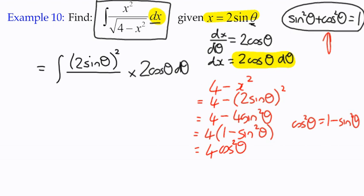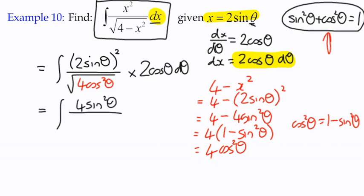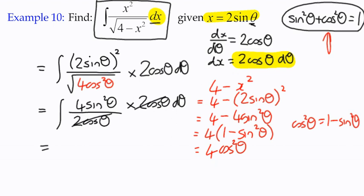We now substitute into the integral: the square root of 4 minus x² becomes the square root of 4cos²θ, which is 2cosθ. So the numerator is 4sin²θ, the denominator is 2cosθ, and we multiply by 2cosθ dθ. Multiplying and dividing by 2cosθ are inverse operations, so the integral simplifies to 4sin²θ dθ.